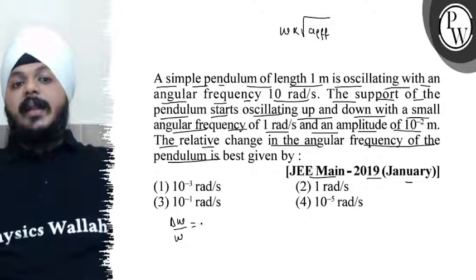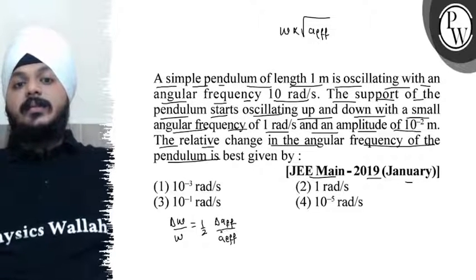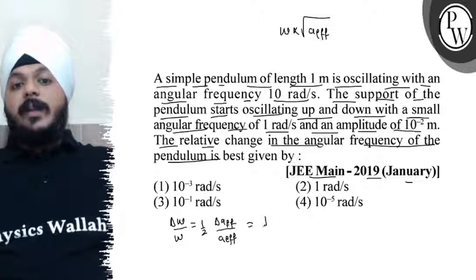So we can write delta omega by omega equals half times the change in effective acceleration by effective acceleration. That will be equivalent to half.